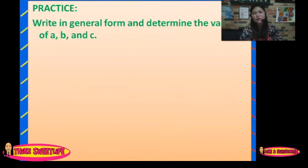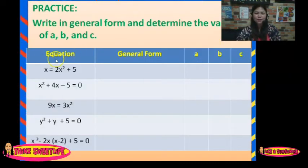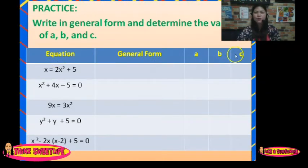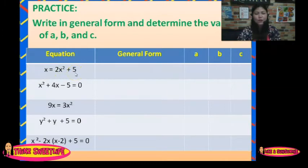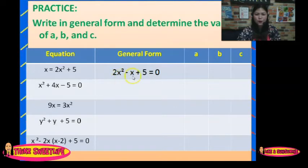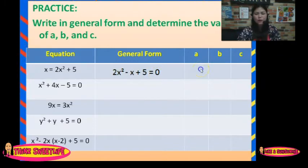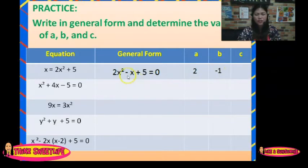Practice: write in general form and determine the values of A, B, and C. We have the first equation: x equals 2x squared plus 5. Arrange it in general form: it becomes 2x squared minus x plus 5 equals 0. The value of A is 2, B is negative 1, and C is 5.